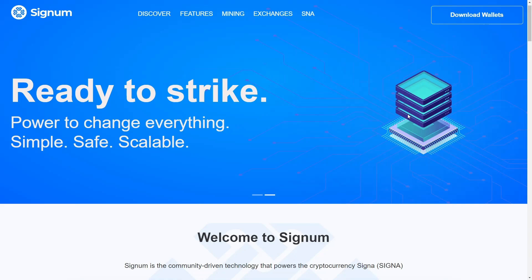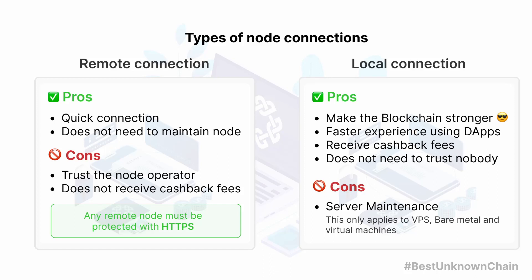Let's compare the benefits of connecting to different nodes instead of your own. Pros of remote connection: easy connection, does not need to worry about maintaining a node. Cons of remote connection: trust the node operator, does not receive cashback fees. Pros of local connection: makes the Signum blockchain stronger, receive cashback fees, does not need to trust nobody. Cons of local connection: server maintenance.